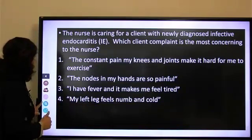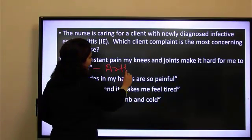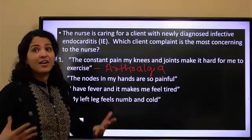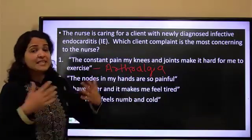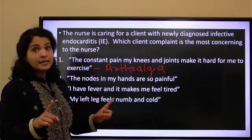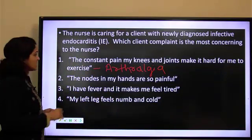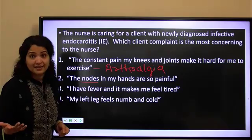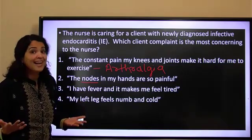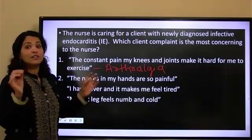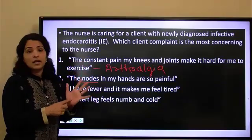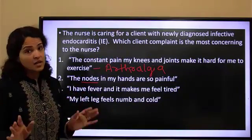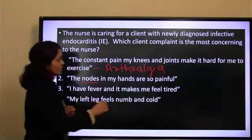With that in mind, option one — arthralgia, knee and joint pain — is not something that will kill the patient. It is a discomfort and has to be taken care of, but it is not going to kill them, so it is not my answer. Option two — the knots, probably Osler's nodes — we know those are going to be there; it is part of endocarditis. Are we going to call the doctor immediately and say the patient has Osler's nodes? The doctor will say, 'Yeah, I saw that — I diagnosed them correctly.' That is expected, so it is not the answer.